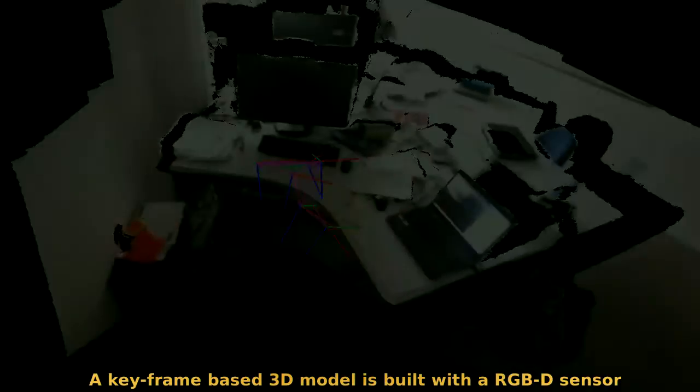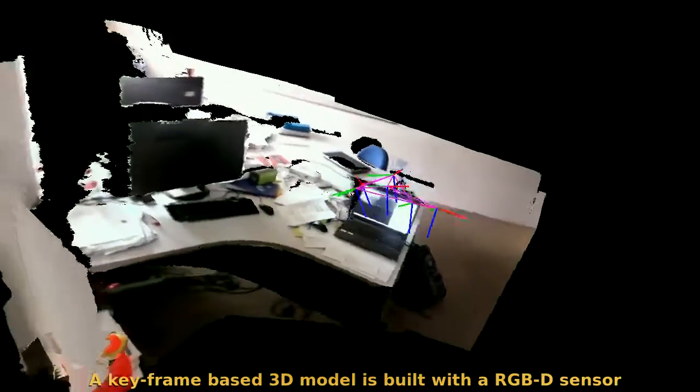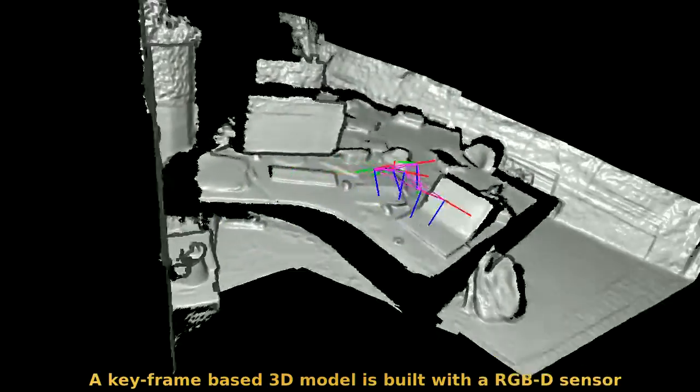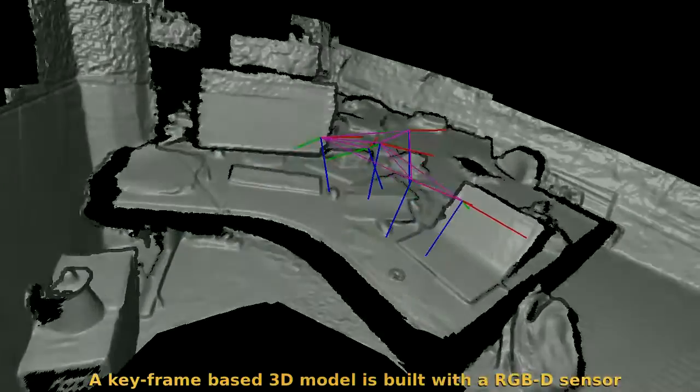Now we will show some results on real images using an RGBD sensor. A keyframe based 3D model is first built in real time. We can see the resulting 3D model based on 6 keyframes.